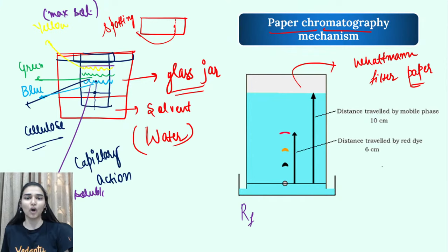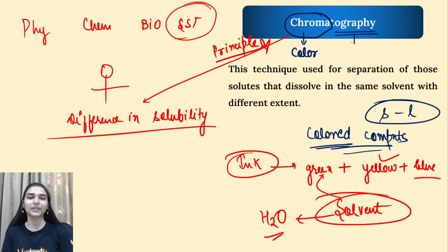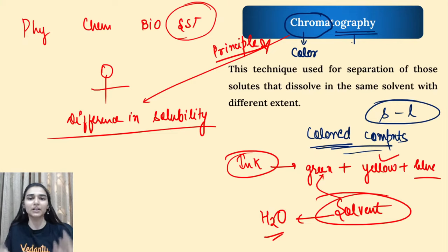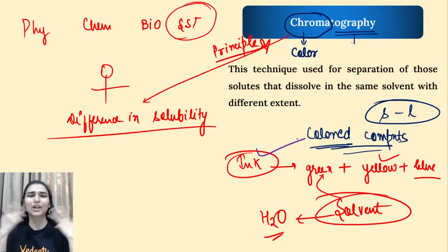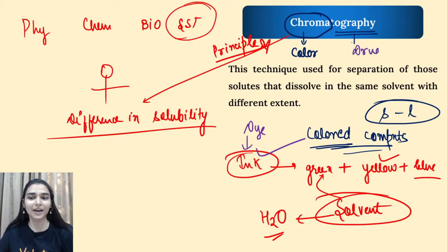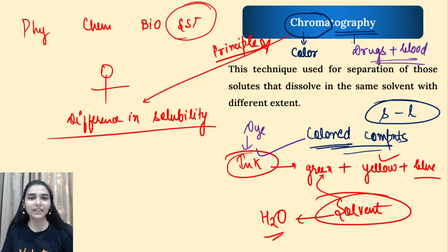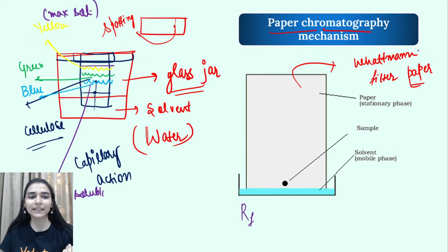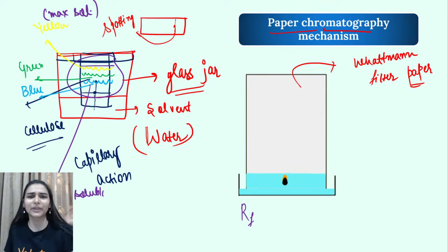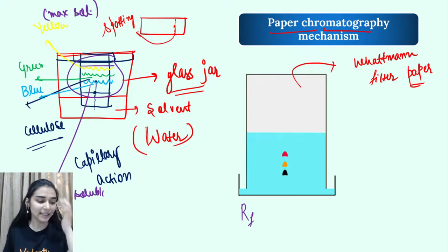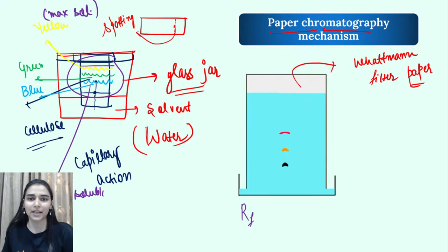To summarize chromatography: it is used for separating colored components in solid-liquid mixtures. The best examples are separating different colors from a sample of ink or dye, and separating drugs from blood. The principle is that different colors have different solubility in the solvent — based on that difference in solubility they are separated at different levels on the paper. The procedure is not generally asked in the exam, but know the principle clearly.